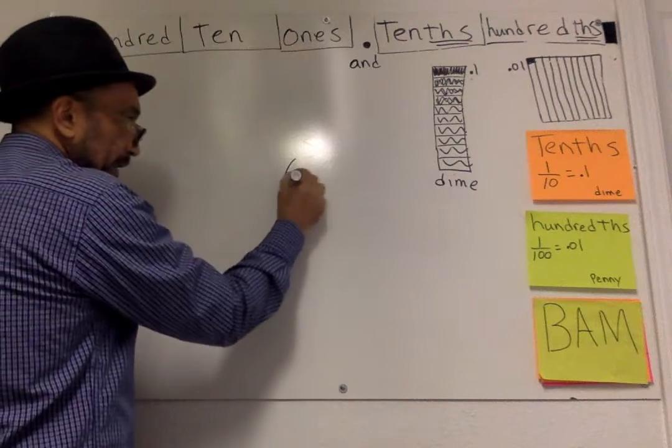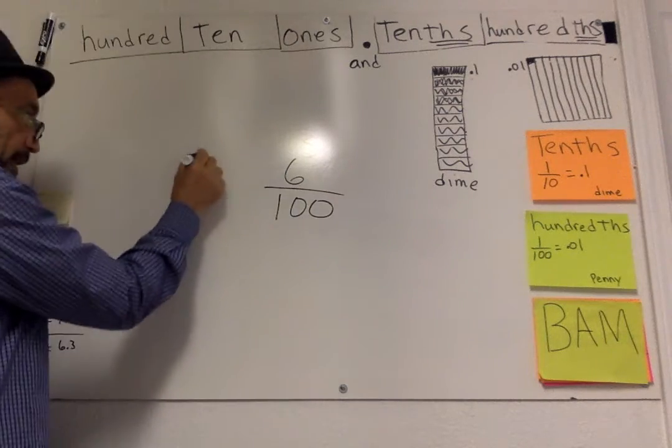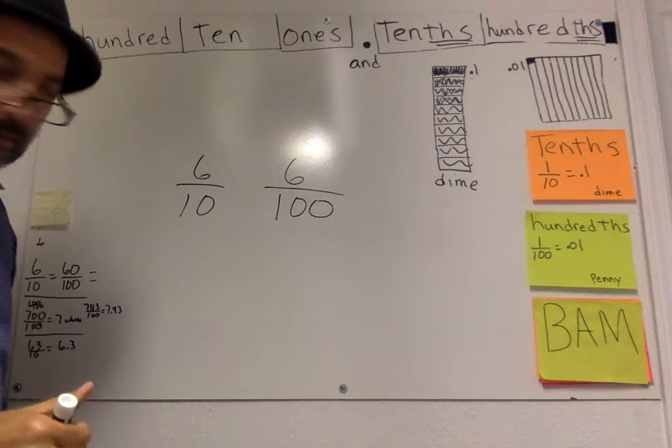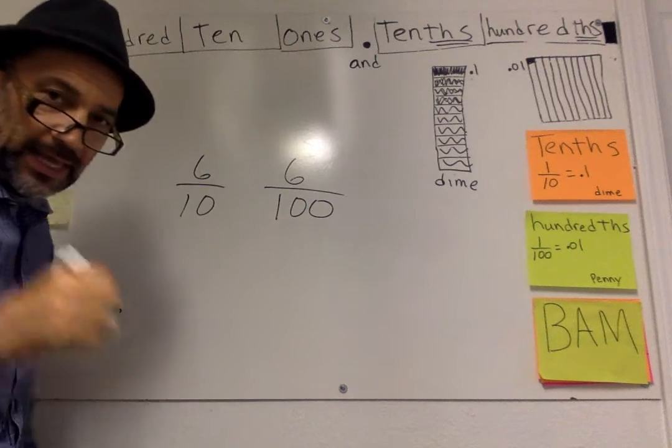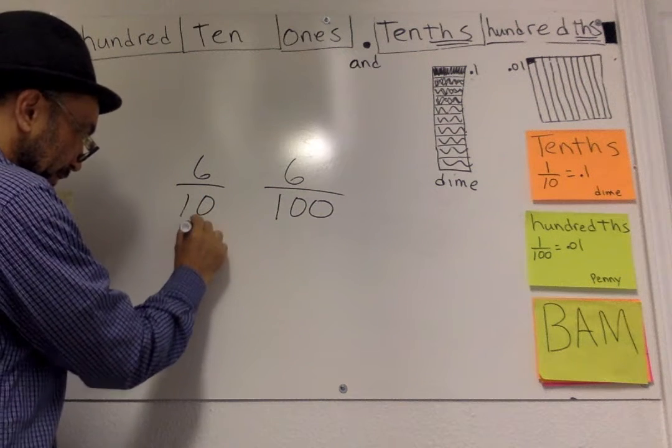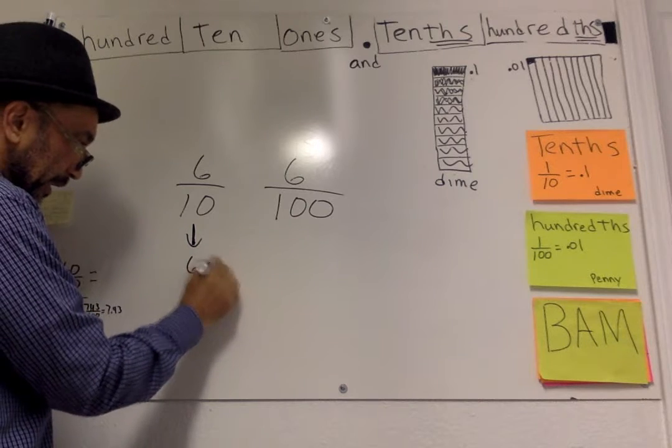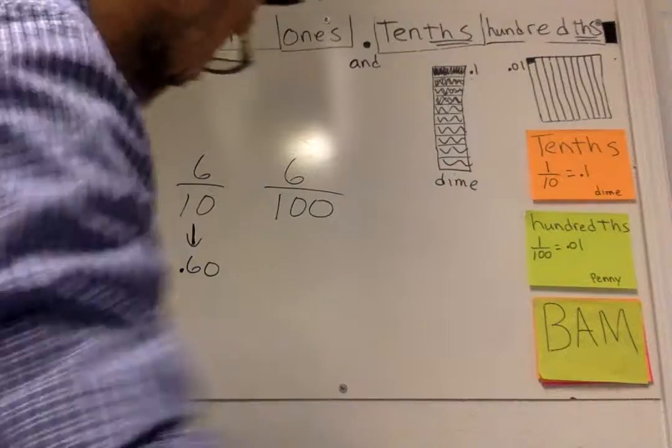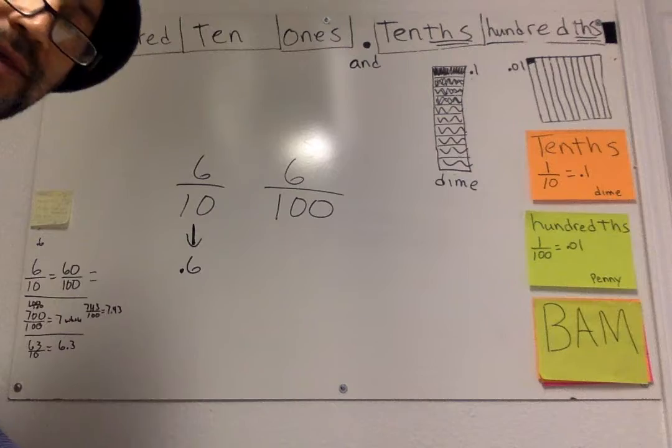Now, when we're doing this, all right, we have to remember, keep your hundreds, no, that's one penny, .01. So if you have six hundreds and six tenths, which is greater? Well, six tenths, because this is six pennies. I'm sorry. This is six dimes. That means this equals, I'm going to put it down here.